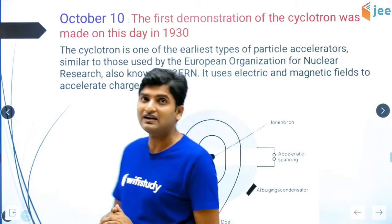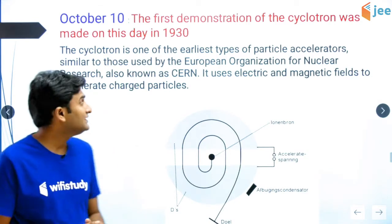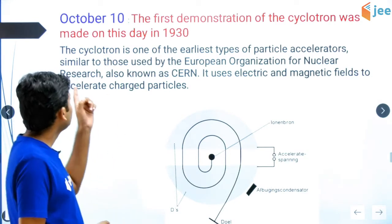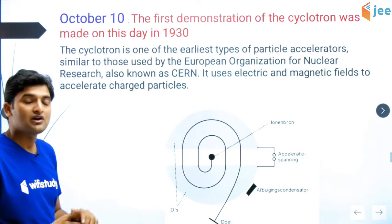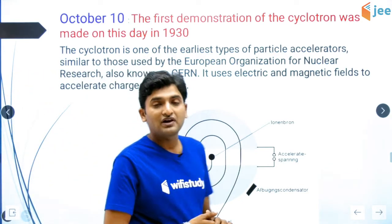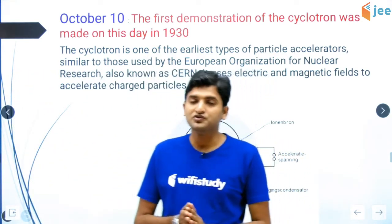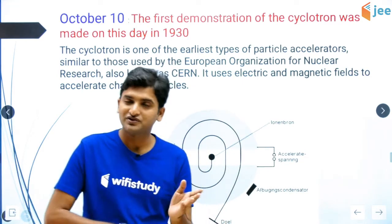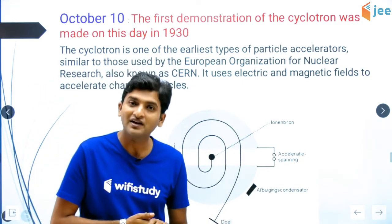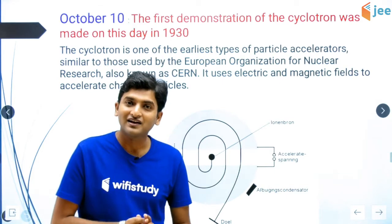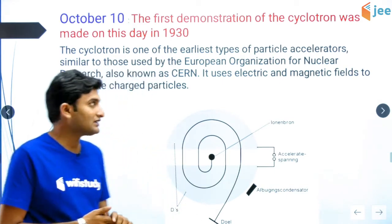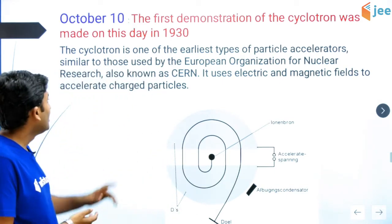The first demonstration of the cyclotron was made on this day — 10th October 1930. Aaj ke din 1930 ko cyclotron ka pehla demonstration develop kiya gaya tha. Jab aap class mein physics mein magnetism padhenge, to us ke andar aapko detail mein padhaenge. Yeh 1930 ko iska pehla demonstration develop kiya gaya tha.